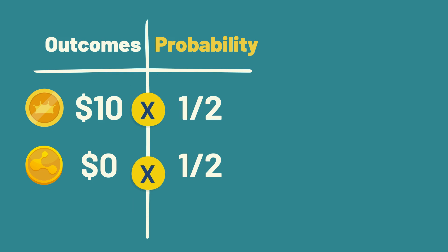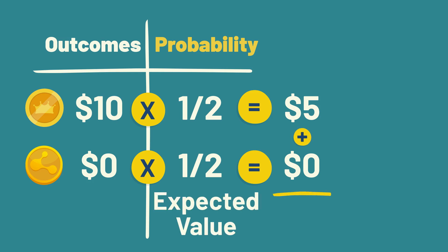Then, we multiply each outcome by its probability of occurring and add the results. 10 times one half is 5, and 0 times one half is 0. Add them together, and we get $5 as the expected value for a single flip.